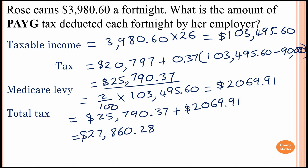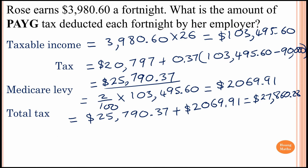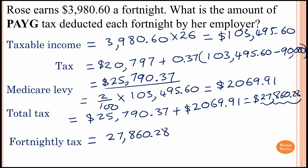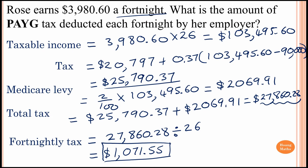So the total tax equals $25,790.37 plus $2,069.91, which equals $27,860.28. That is the total tax she has to pay for the year. To work out the fortnightly PAYG tax, we divide $27,860.28 by 26, which equals $1,071.55. So her PAYG fortnightly tax is $1,071.55.